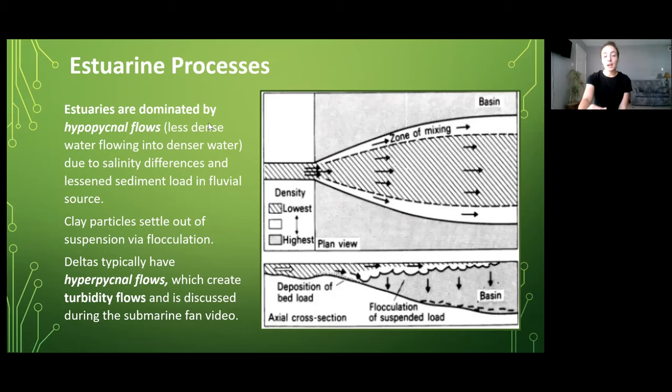For example, estuaries are dominated by hypopycnal flows. Hypopycnal flows are flows where less dense water flows into a denser water body. This is typically caused because the salinity in estuarine basins is greater than the fluvial inflow because of the marine influence. However, where fluvial inflow is dominant and you have deltas forming and building out further offshore due to progradation, these are typically dominated by hyperpycnal flows. Hyperpycnal flows are flows in which the incoming flow is more dense than the water it is flowing into.